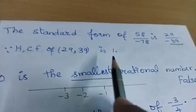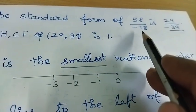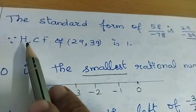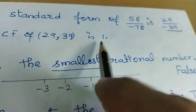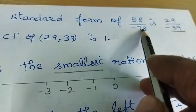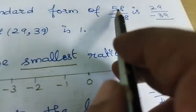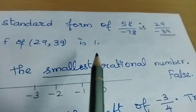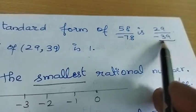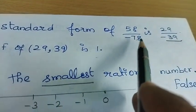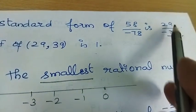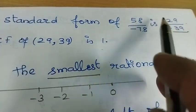Fifth one: The standard form of 58 by minus 78. For standard form, the numerator and denominator should have highest common factor of 1. Dividing both by the HCF gives the standard form. The second part: 29 by minus 39 is also in standard form.